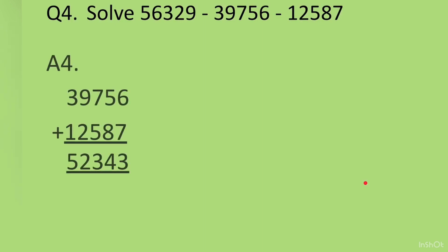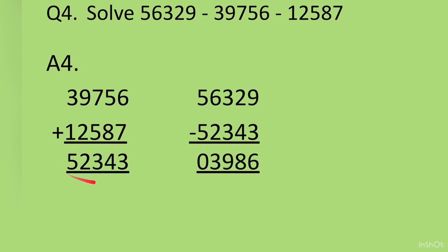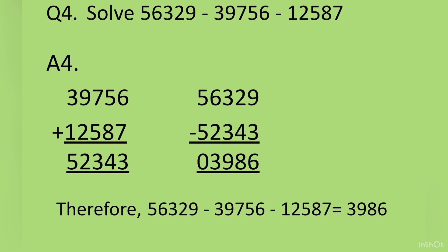Question 4: Solve 56,329 minus 39,756 minus 12,587. For this we will first add the two negative numbers, so 39,756 plus 12,587 = 52,343. Now we will subtract 52,343 from 56,329 and we get 3,986. We write the number sentence: therefore 56,329 minus 39,756 minus 12,587 = 3,986.